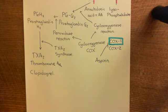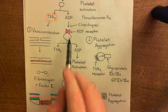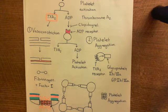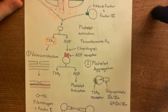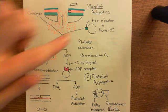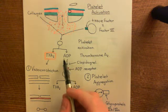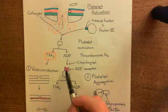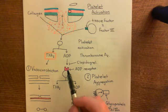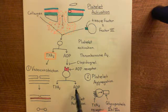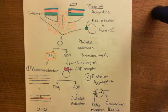Remember, clopidogrel was a competitive antagonist of the ADP receptor on the surface of platelets. To get the chain reaction in activation of platelets, your initial platelet has to be activated by collagen or tissue factor. It will then release thromboxane A2 and also adenosine diphosphate (ADP). ADP will then activate other platelets by binding to the ADP receptor on the surface of the platelet, triggering activation of that platelet, which will then release thromboxane A2 and more ADP. So you get this chain reaction of activation of more and more platelets.